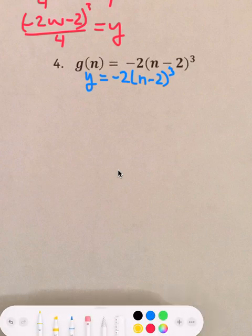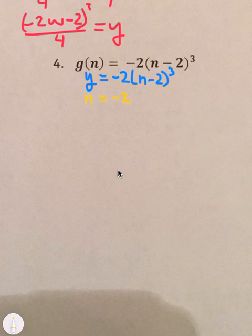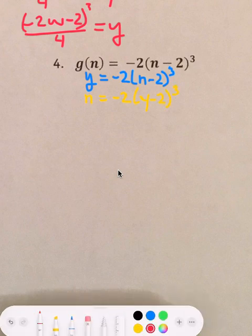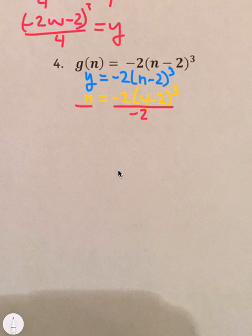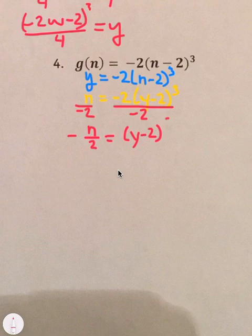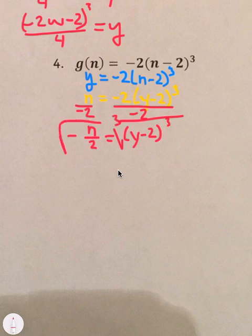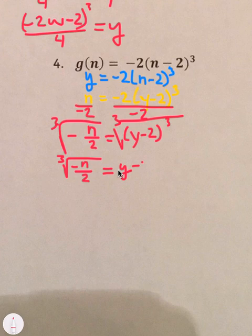Switch y and n. So, n equals negative 2 times y minus 2 cubed. Step 3 is solve. Solve for y. So, we need to get rid of this negative 2 by dividing by negative 2. So, that means we have negative n over 2 equals y minus 2 cubed. So, now we have only a cubed by itself. So, we take the cube root of both sides. So, we end up having the cube root of negative n over 2 equals y minus 2.